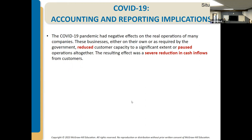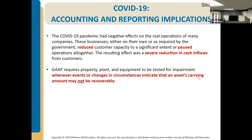As far as COVID-19 and financial reporting, there were a lot of different businesses affected in their operations. Either they had to temporarily cease operations, pause, or some places went out of business. Many businesses had dramatic reductions in cash flows related to their customer services, leading to a lack of comparability in financial statements from one year to the next. This could also affect fixed assets if they're not producing the same level of cash flows.